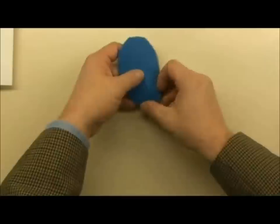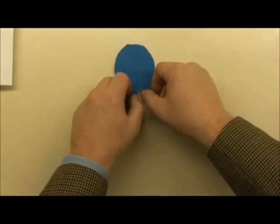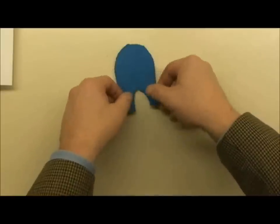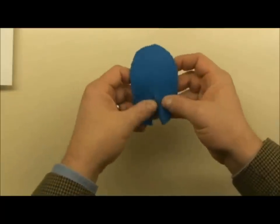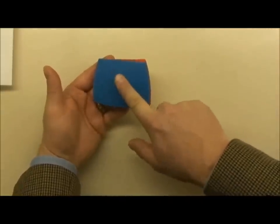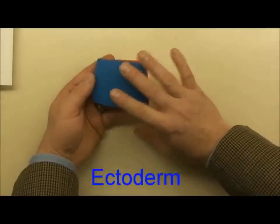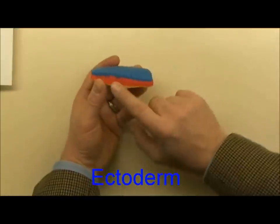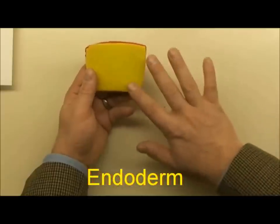As they roll under, they're going to form a new layer, two new layers actually, that are being called the endoderm and the mesoderm. And as this process completes, what we're left with is this epiblast cell layer on top, which is now magically referred to as the ectoderm. In red we have the mesoderm and in yellow we have the endoderm.